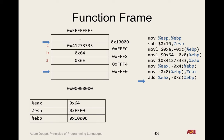Any other questions on this function frame? So basically, we use the base pointer to allocate a frame for the function. We allocate 16 bytes here. In C, where are you supposed to declare variables in a function? At the top, right at the beginning.